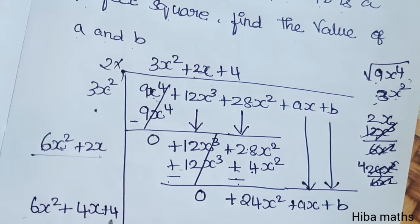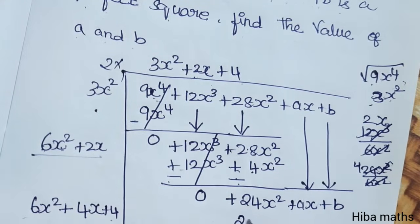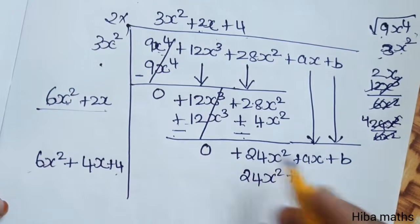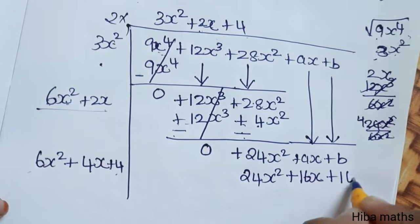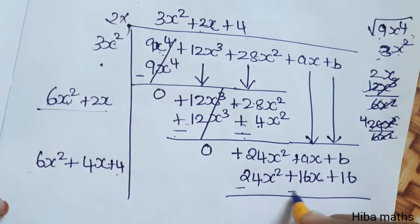Now 4 times all: 4 times 6x² is 24x², 4 times 4x is 16x, plus 4 times 4 is 16. Minus minus.